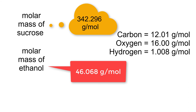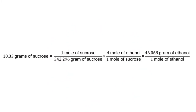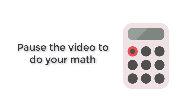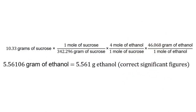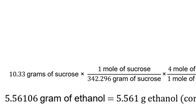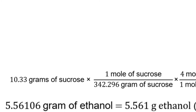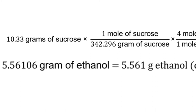Now that those calculations are complete, we can plug those numbers into the equation that we set up. Please do this now. This is what our equation should look like with the numbers and the units. Once you have checked your setup, please go ahead and determine the number of grams of ethanol that would be produced from 10.33 grams of sucrose. You should have gotten 5.56106 grams of ethanol, which rounds to 5.561 grams as your final answer. As a reminder, 10.33 grams has four significant figures, which means our final answer needs four significant figures. Please make sure you wait until the end to round, or else you may get a different answer. Thank you for watching.